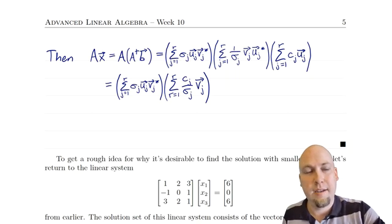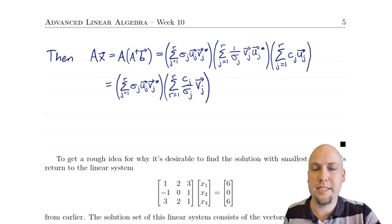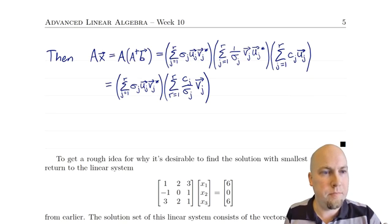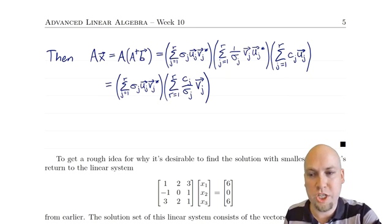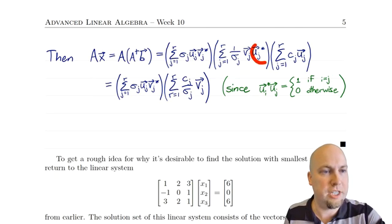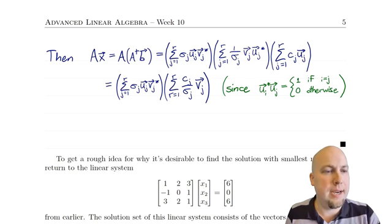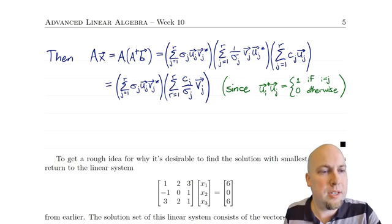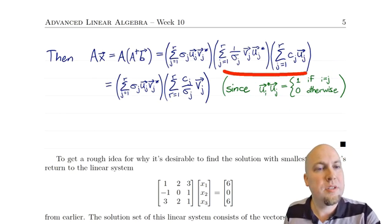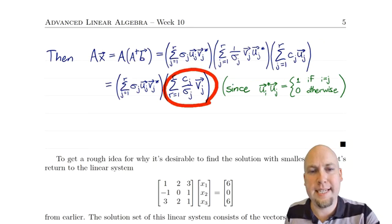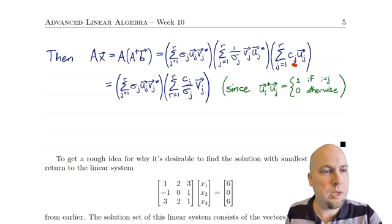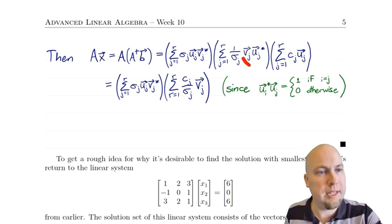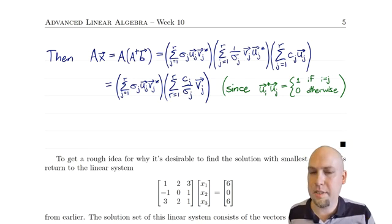Lots of these products are going to be zero and go away, and the sum collapses. Computing the right product first: I get Vj times Ui* times Uj. This is nice because Ui* times Uj is the dot product of Ui and Uj, which are vectors from an orthonormal basis. So this inner product equals 1 if the subscripts match and 0 otherwise. The double sum collapses to a single sum, and all you're left with is cj/σj times Vj.